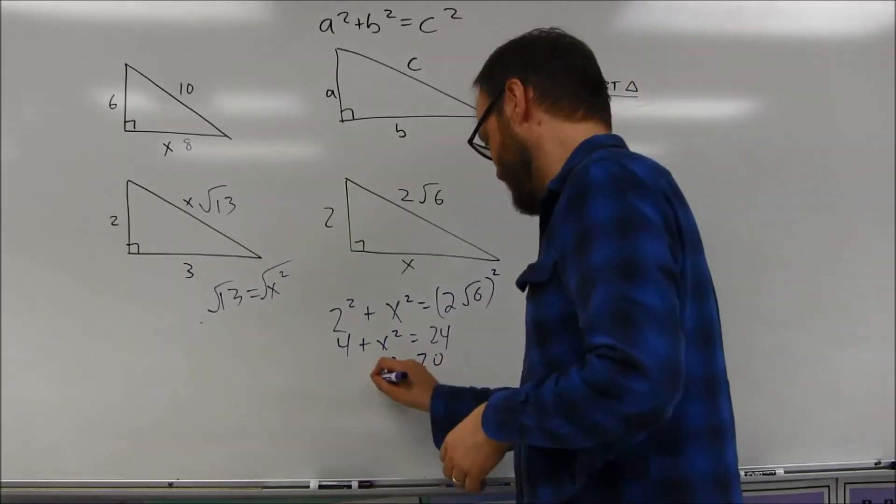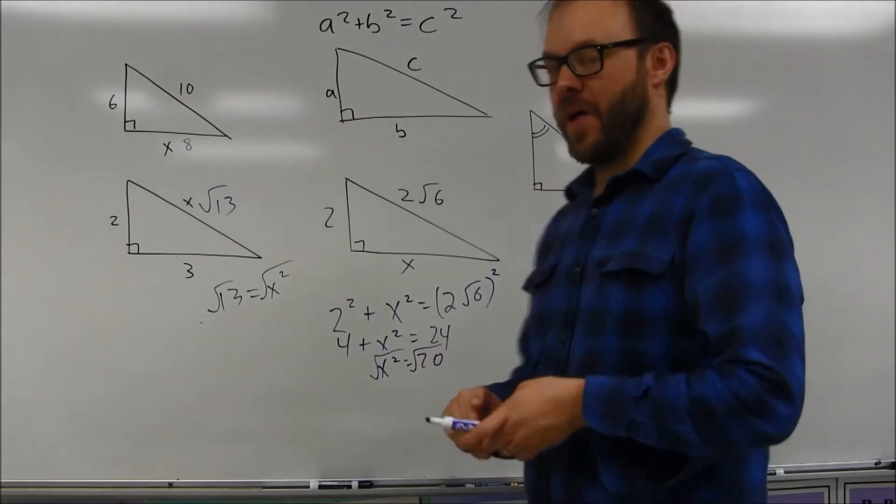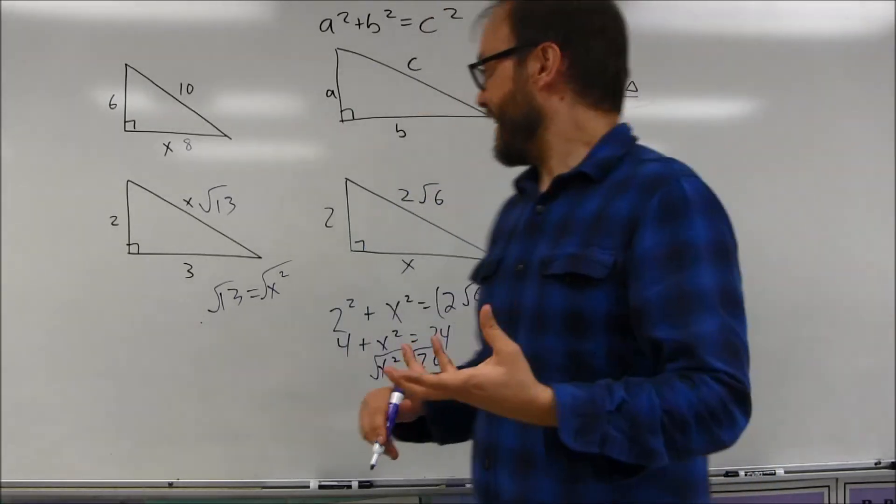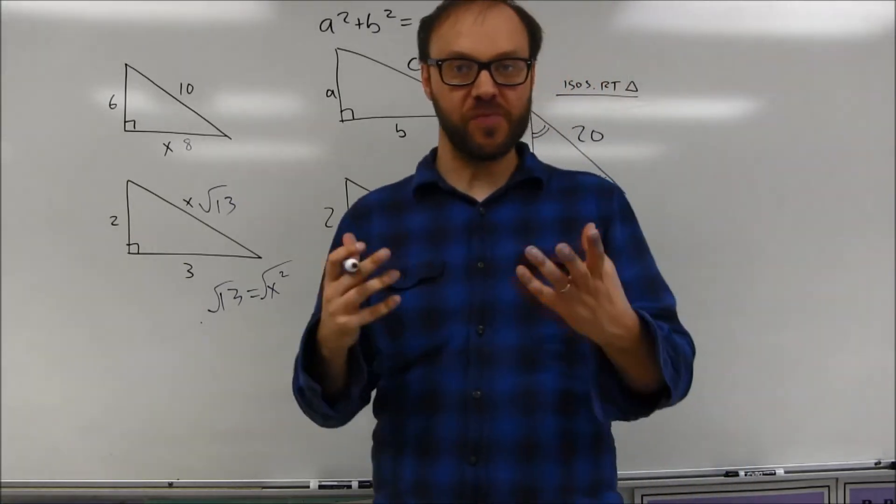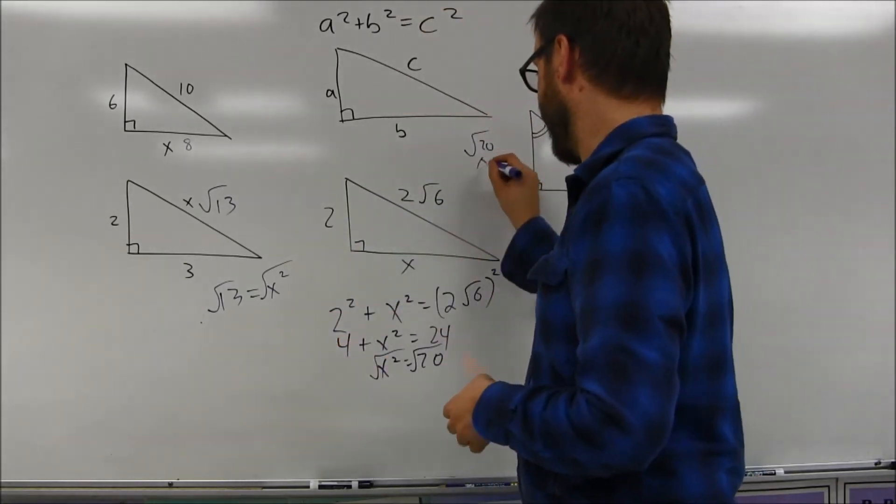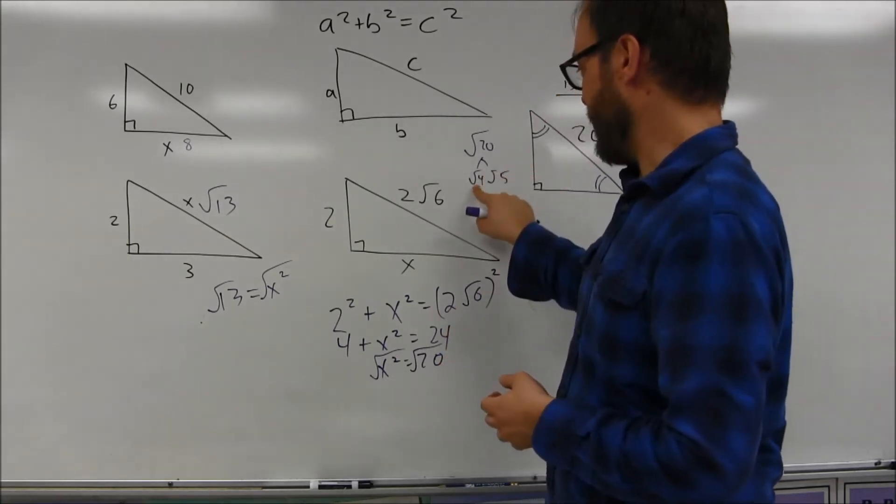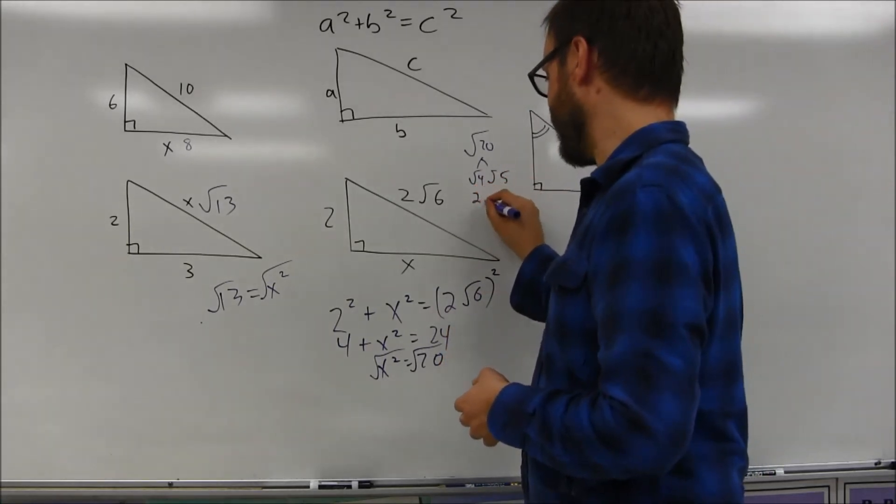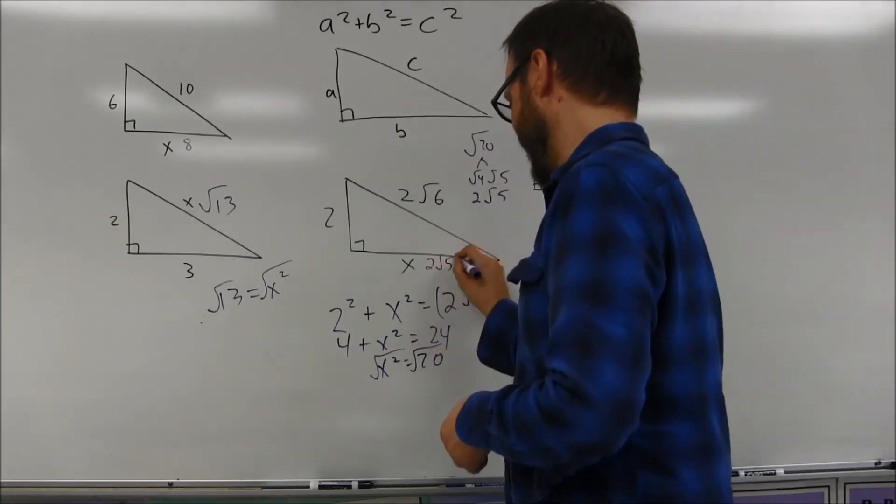The square root of 20, when you take the square root of both sides, the square root of 20 is going to be your answer. Remember, 20 is a square root that can be broken down. You look for the largest perfect square that can go into 20. 4 is the largest perfect square that goes into 20. The square root of 4 is 2. It's being multiplied by the square root of 5. So your missing side here is going to end up being 2√5.